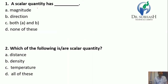Question 1: A scalar quantity has — we know that a scalar is a quantity which has only magnitude. So here the answer is A: a scalar quantity has magnitude.